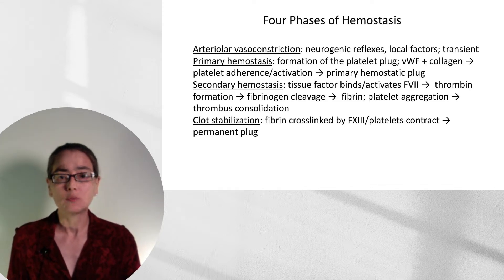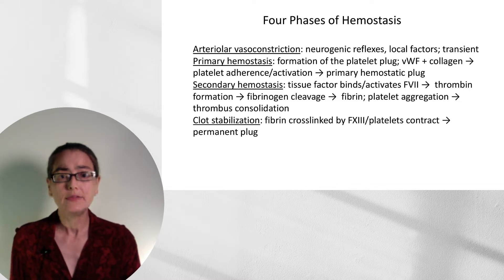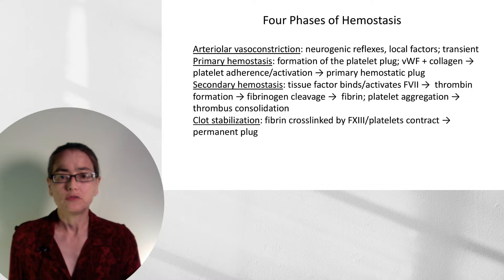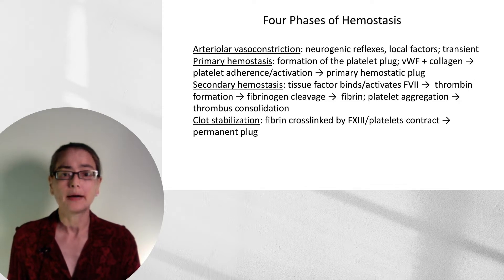This plug is not particularly stable or strong, and with the force of blood flow could be simply washed away. So we need secondary hemostasis to really prevent bleeding. Tissue factor binds and activates factor VII, and we go through the coagulation cascade, leading to thrombin formation, which causes fibrinogen cleavage to yield fibrin, helping solidify the clot. We also have additional platelet aggregation as signals amplify each other, ending with thrombus consolidation. Finally, clot stabilization occurs — fibrin is cross-linked by factor XIII, and platelets contract to yield a permanent plug.